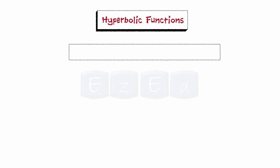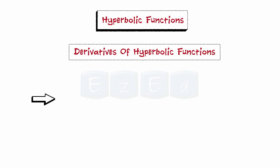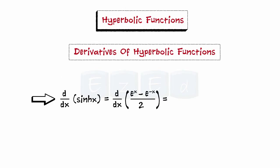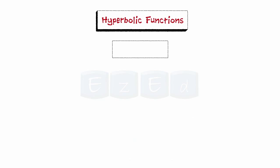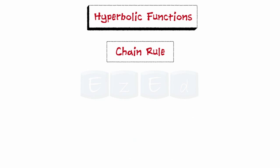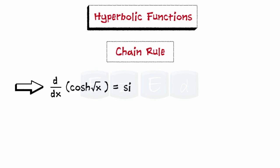Let us look at the derivatives of the hyperbolic functions. The derivatives are easily computed. For example, the derivative of sinh x = d/dx[(e^x − e^(−x)) / 2] = (e^x + e^(−x)) / 2 = cosh x. Any of these differentiation rules can be combined with the chain rule. For instance, the derivative of cosh(√x) = sinh(√x) · (1/(2√x)).